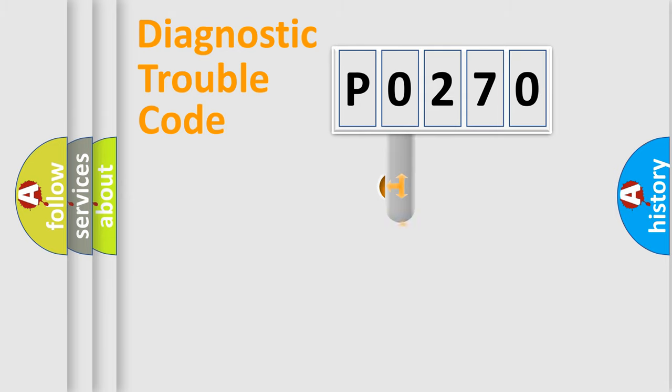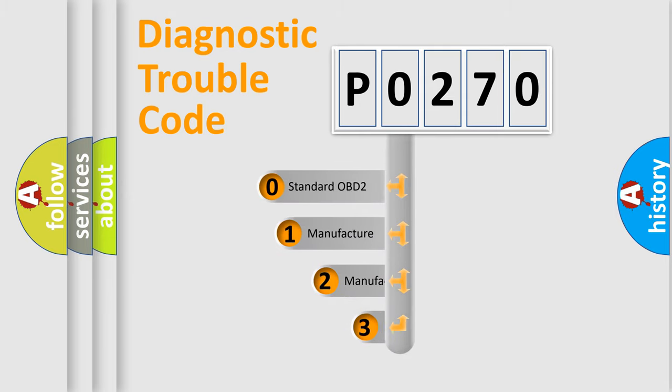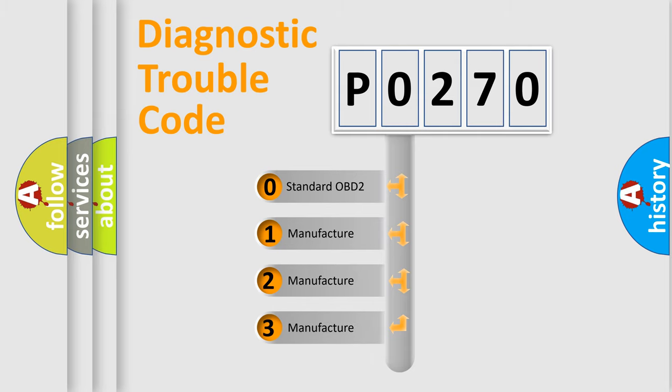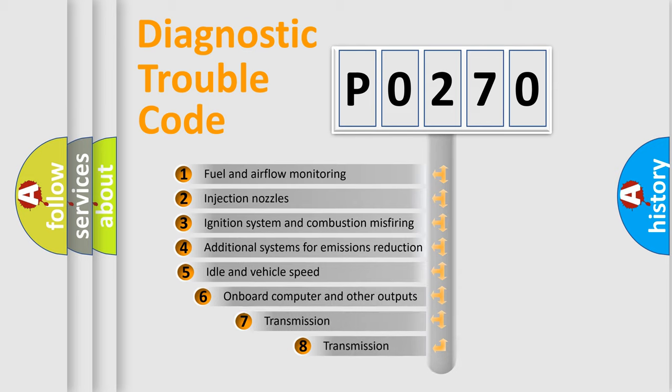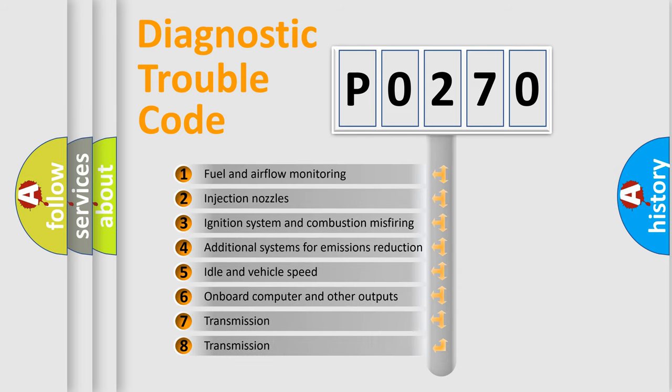This distribution is defined in the first character code. If the second character is expressed as zero, it is a standardized error. In the case of numbers 1, 2, or 3, it is a more specific expression of the car-specific error. The third character specifies a subset of errors.